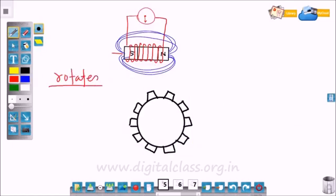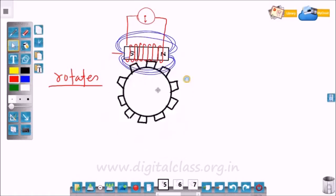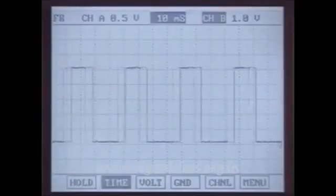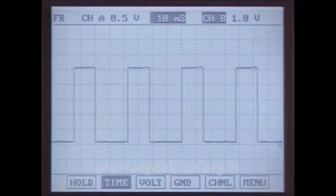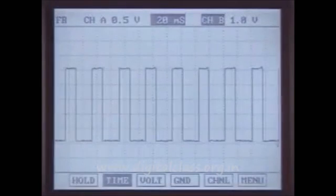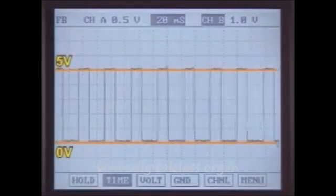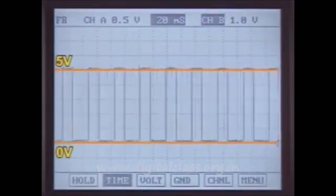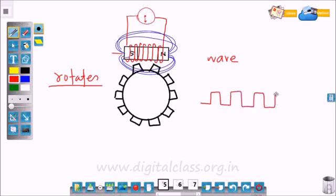This square wave is generated due to the rotation of the rotor. This square wave can be shown on a display, or the number of pulses generated per time can be measured with the help of a pulse counter.